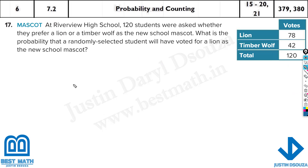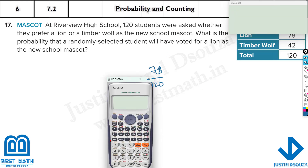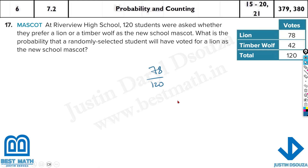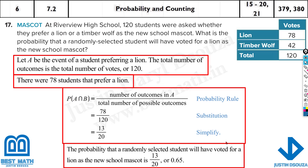Next, at Riverview High School, 120 students were asked whether they prefer a lion or a timber wolf as the new school mascot. What is the probability that a randomly selected student voted for lion? From the given details, 78 chose lion out of 120 total students. So we put 78 divided by 120 into the calculator, and the answer is 0.65, or 65% if you multiply by 100.